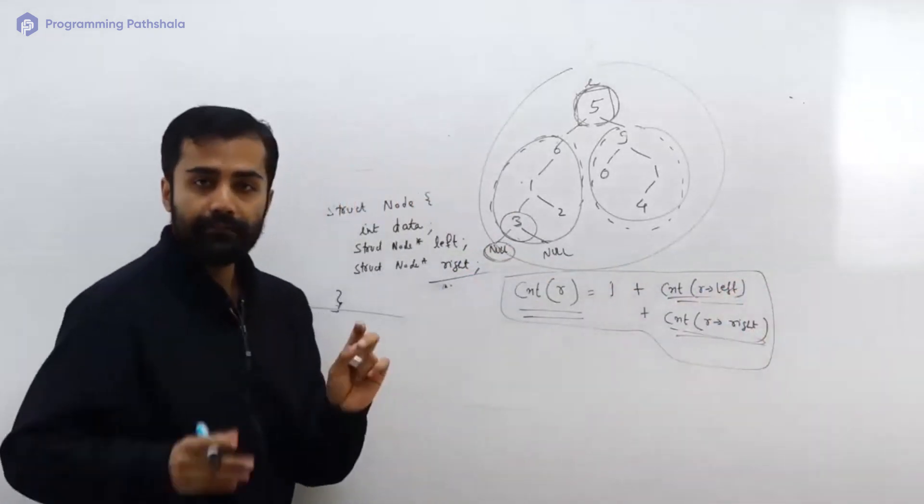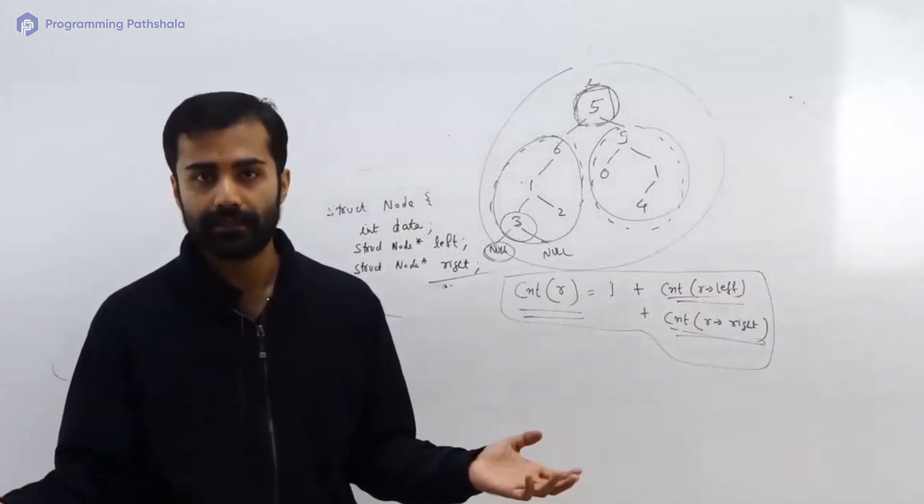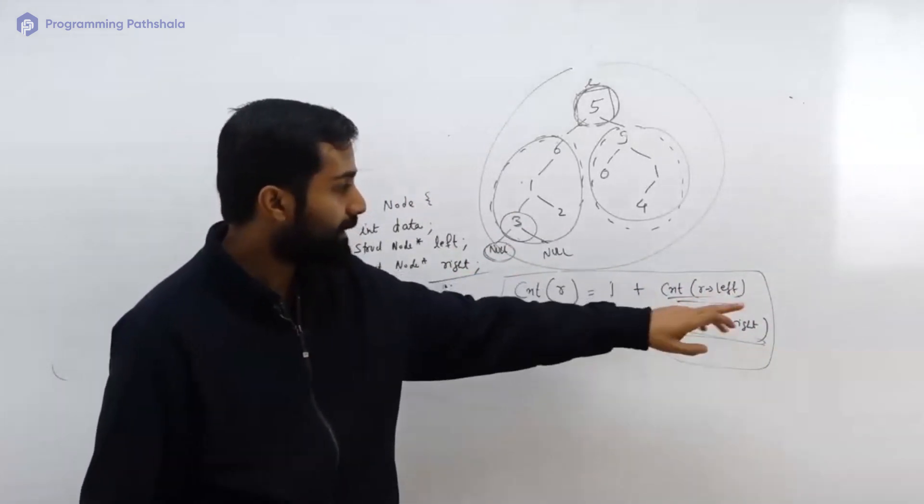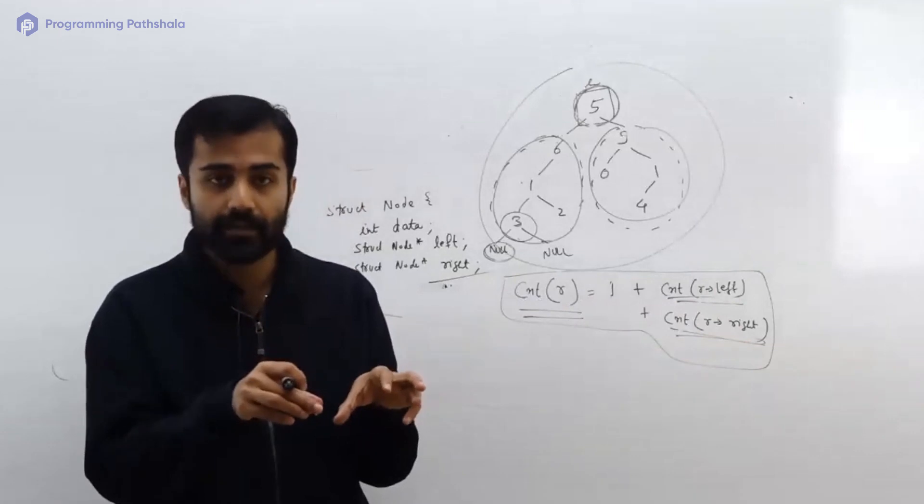And whenever you do null arrow something, you get null pointer exception, because null is nothing. When you use arrow operator, you are trying to extract something from r, and if r is null, the computer will say hey, it's illegal - it's null pointer exception.